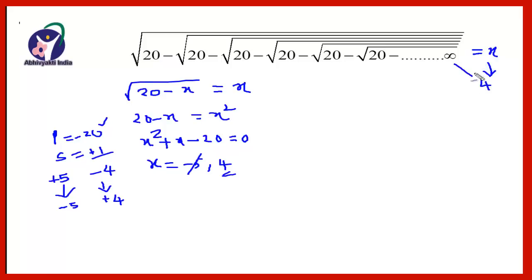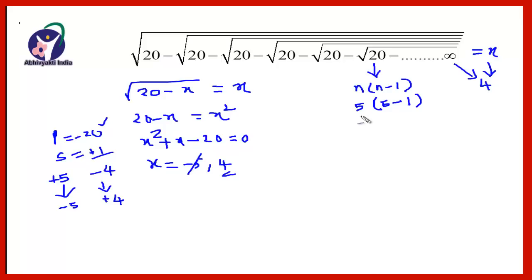If you observe this question again, you will see that 20 can be written in the form n times (n minus 1). It will be 5 times (5 minus 1), that is 5 times 4. These are consecutive numbers, and the smallest of the two numbers is the answer. So the value of this expression equals 4.